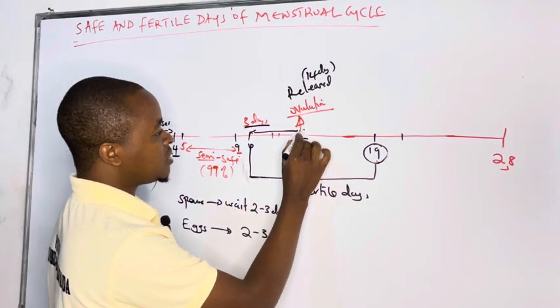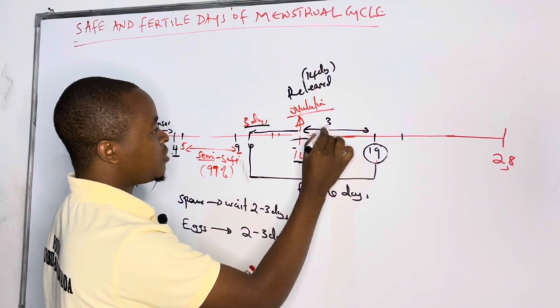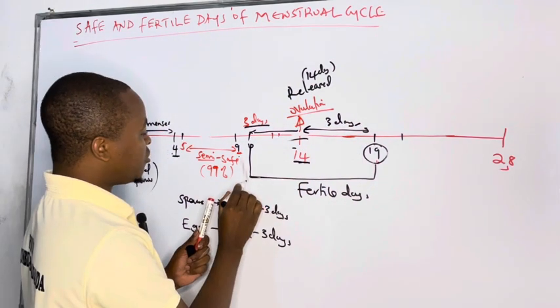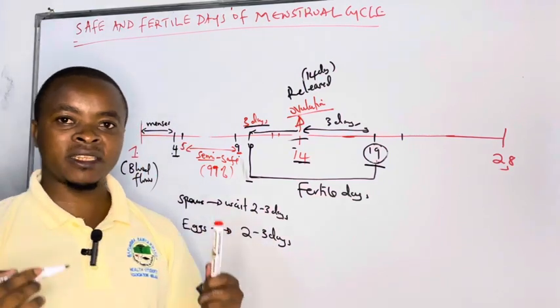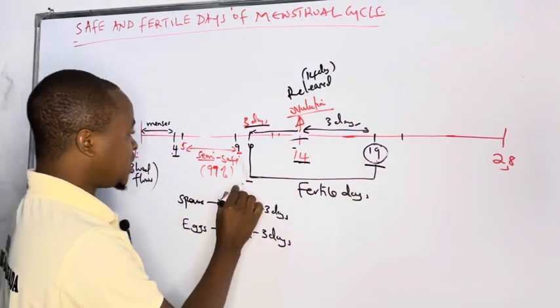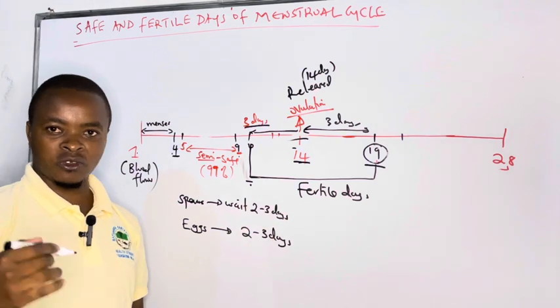Also, after the egg being released, it also waits for 3 days. That's why from day 10 to day 19th, those are fertile days. In the case you want to have pregnancy in your marriage, you can always target these days. Make sure in those days you'll be active.